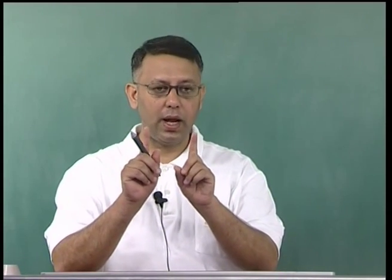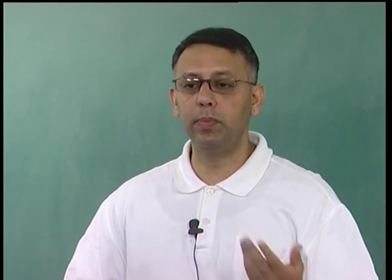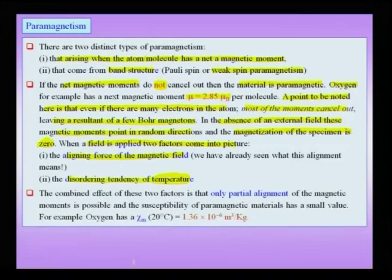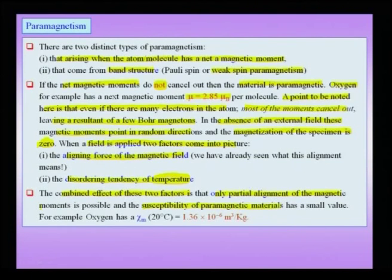The combined effect of the aligning magnetic field and the disordering effect of temperature means there is only partial alignment of magnetic moments in a paramagnet. Paramagnetic moments never completely align at any reasonable positive Kelvin temperature. The susceptibility of paramagnetic materials is usually small — for example, oxygen at 20°C has a susceptibility of 1.36 × 10⁻⁶ m³/kg — and is a positive quantity, since the alignment is along the applied field.